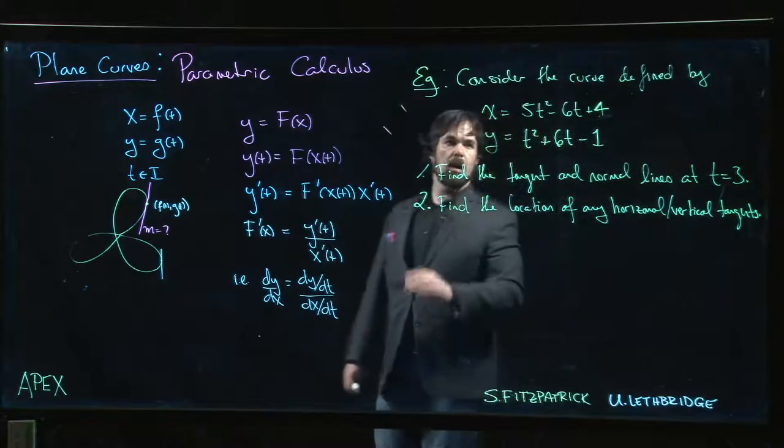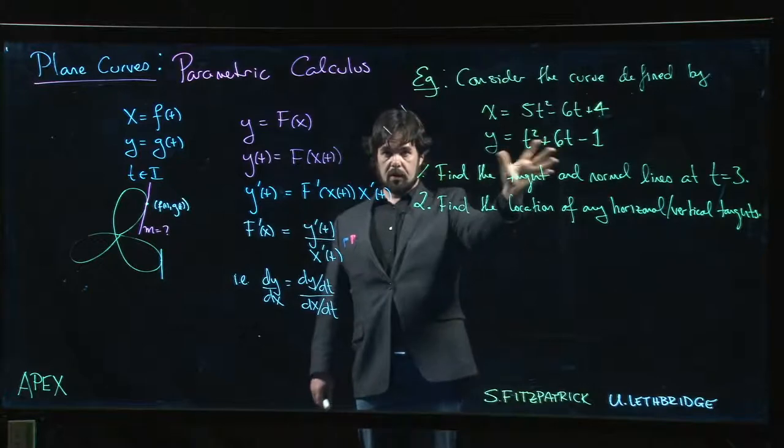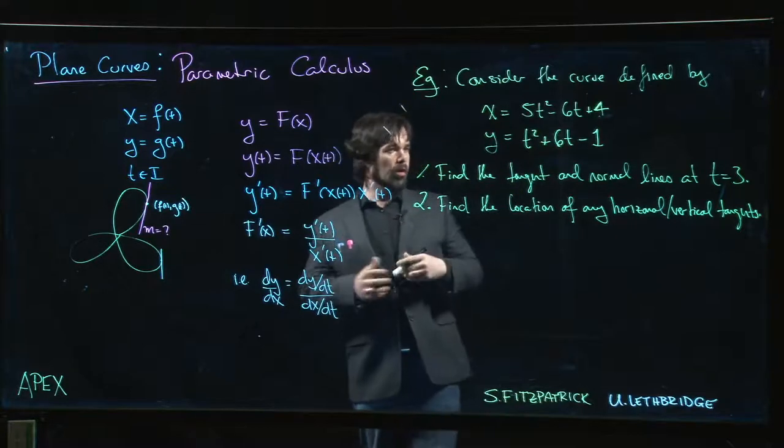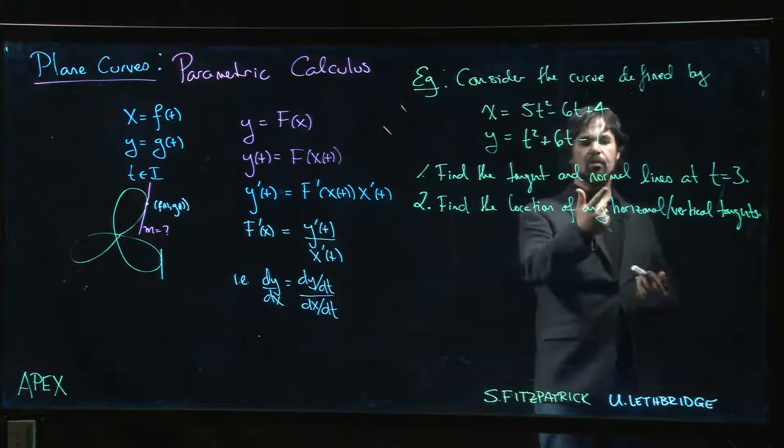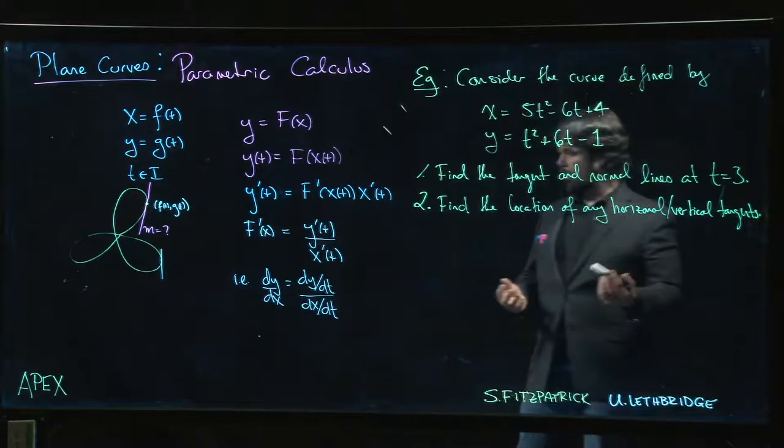Alright, so here's an example. We have a parametric curve given by these equations here. We're going to first try to just find the equations to the tangent line. We're also going to look at a normal line, right?